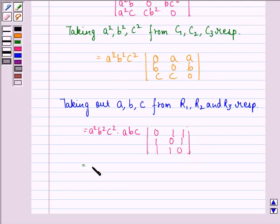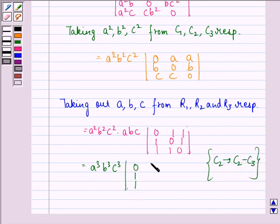This equals a³b³c³. Now, here we operate column 2 goes to column 2 minus column 3. So we have the determinant: 0, 1, 1, 1, now 1 minus 1 is 0, 0 minus 1 is -1, 1 minus 0 is 1, 1, 1, 0.